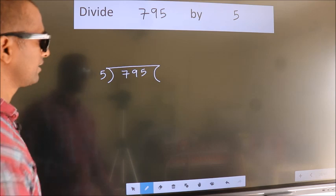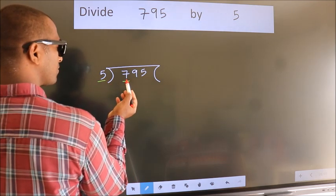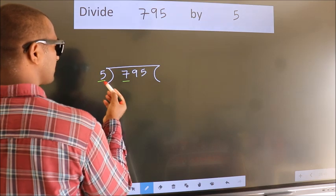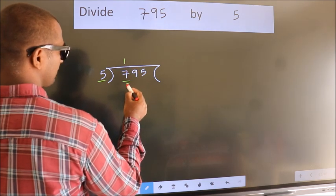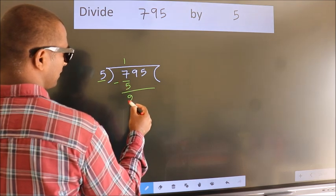Next. Here we have 7, here 5. A number close to 7 in the 5 table is 5 once 5. Now we should subtract. We get 2.